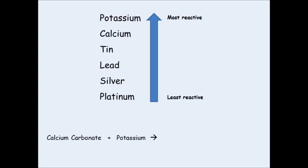Next, please pause this presentation whilst you think about what the products are. We have a different compound this time — a carbonate. As you can see, it doesn't matter what the compound is; it could be an oxide, a nitrate, a carbonate, or a sulphate. What really matters is the metals. The two products are calcium and potassium carbonate. Looking at the reactivity series, potassium is above calcium, so potassium kicks out the calcium and takes the carbonate for itself, giving potassium carbonate in the products and calcium on its own.